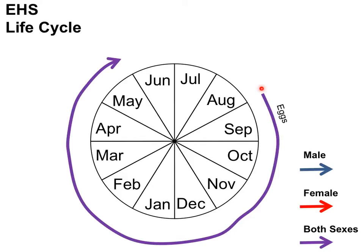The eggs are found from September to May and generally hatch out at the beginning of June. What hatches out from the eggs is the first instar nymph, also known as the crawler stage. The crawler has legs and can walk and run around to find an appropriate place to settle on their own, or they can be dispersed by wind or animals such as deer or birds. They settle on the underside of young needles on the lower part of the hemlock crown.